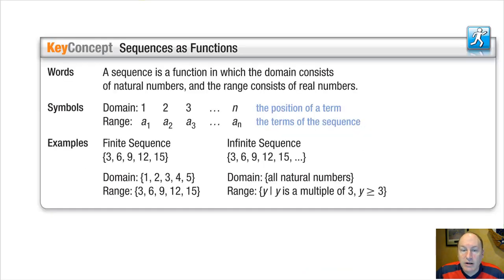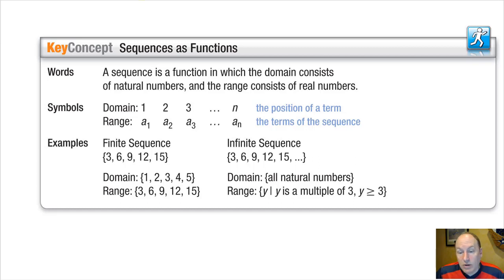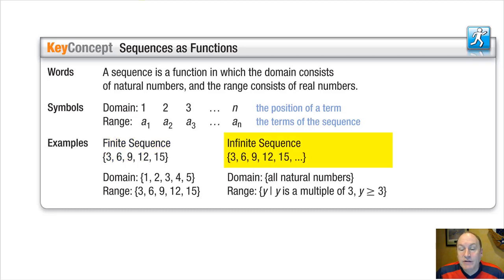A sequence is a type of function where the domain consists of natural numbers, which begin at 1 and move upwards. The range consists of any real number. There are two overall types of sequences: finite sequences, which have a specific number of elements, and infinite sequences, which go on forever.